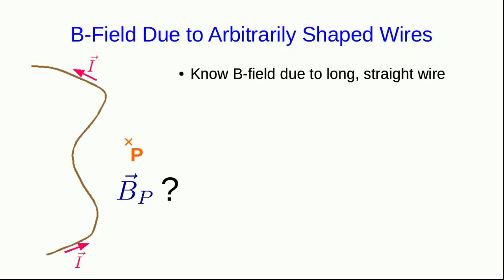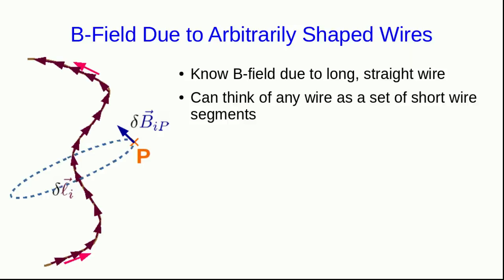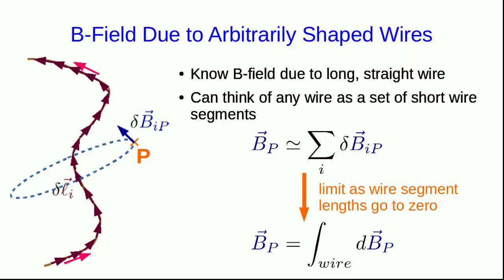The approach we're going to take is going to be pretty familiar. We're going to break the wire into little bits. We can think of any wire as a set of short wire segments. Each segment will produce a B field at the location we're interested in, and then the total B field would just be the sum of all those. Or more precisely, we have to take the limit as our wire segment lengths go to zero, which turns this into an integral.